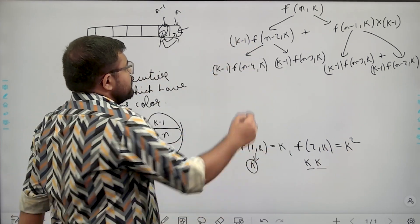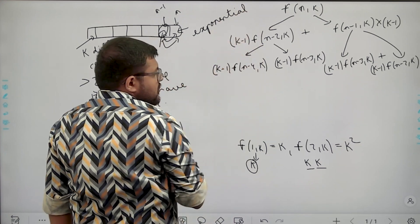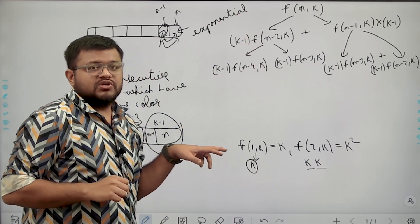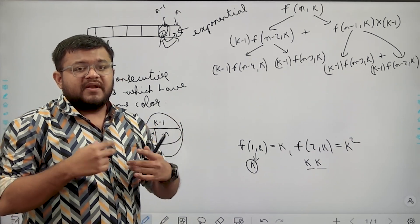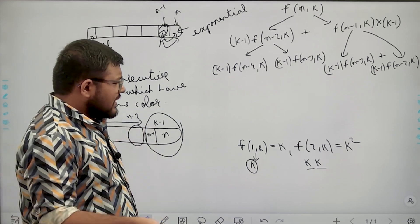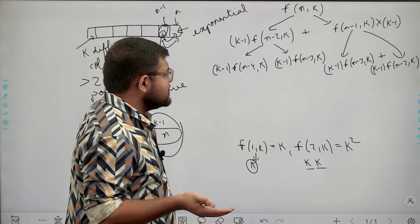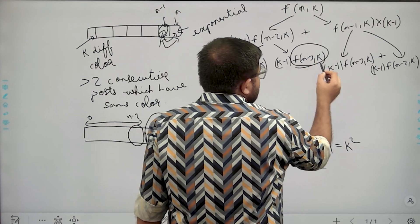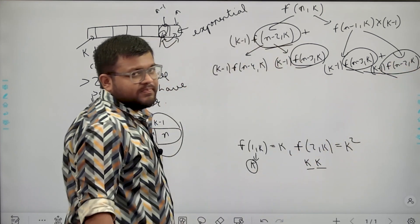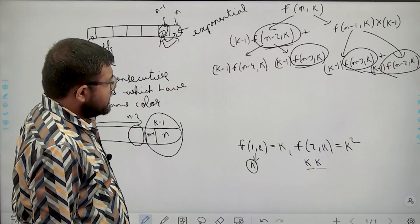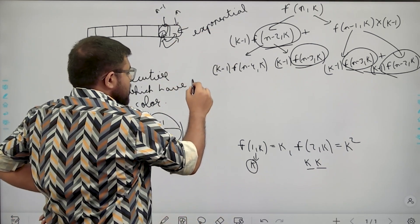This recursive function will take exponential time to solve. We want to convert it to polynomial time, so we can think of dynamic programming. The subproblems are overlapping — for example, f(n-2, k) and f(n-3, k) appear multiple times — so we can use dynamic programming.